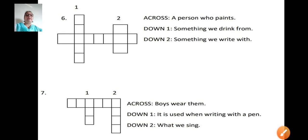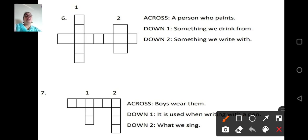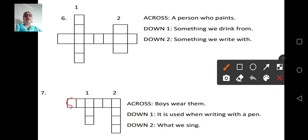Let's see the sixth one. A person who paints. Across we have to write. It is very simple. A person who paints is a painter. P-A-I-N-T-E-R painter. And now let's see down one. Something we drink from. Yes. C-G-L-A-S-S glass. Then second down. Something we write with. We write with three letter word. And at the center E is there. What do we write with? A pen.